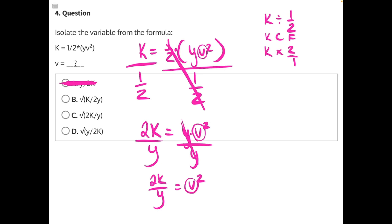Now the last thing we need to do to isolate v is get rid of this exponent. The opposite operation to an exponent is a radical, a square root. So this square root will cancel out this exponent, and whatever we do to one side of the equation we always need to do to the other. So our final answer is v equals the square root of 2k divided by y, making C our correct answer.